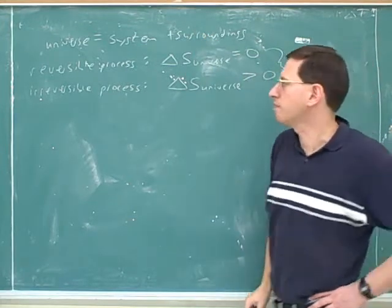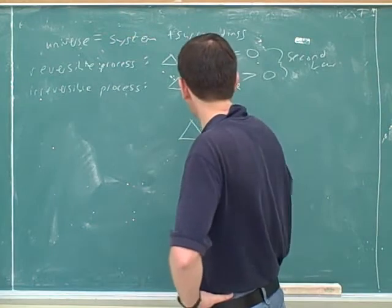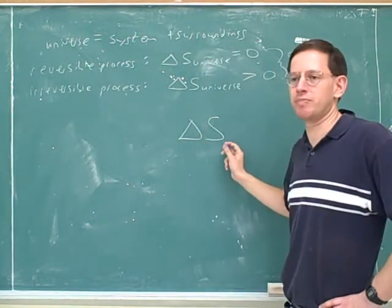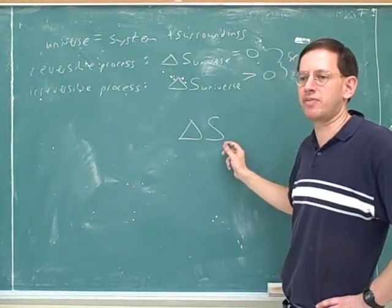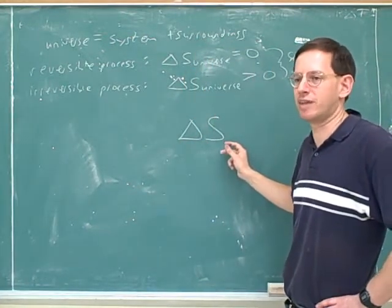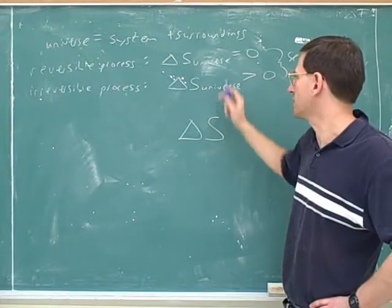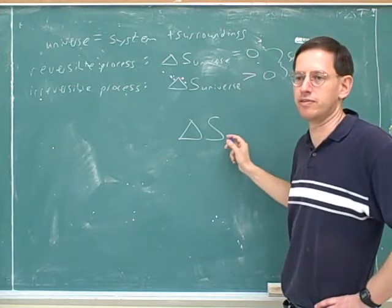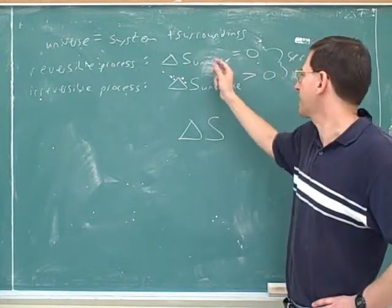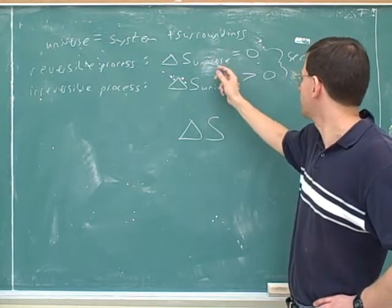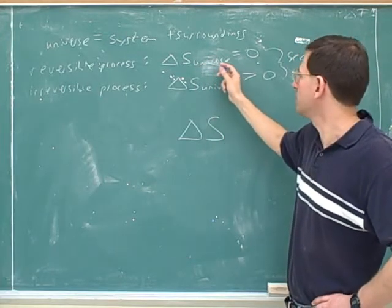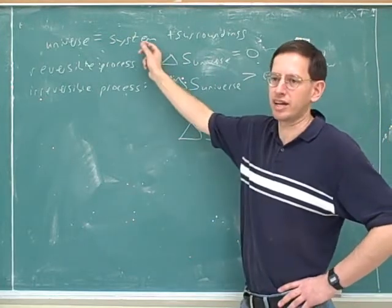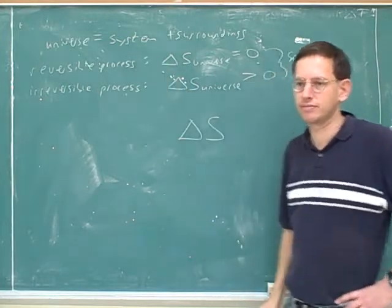One problem that a lot of students have is they just write down delta S without the subscript. It's very helpful to write a subscript — am I focusing on the system, the surroundings, or the universe? The second law focuses just on the universe. It doesn't say that the entropy of any individual part can't go down.